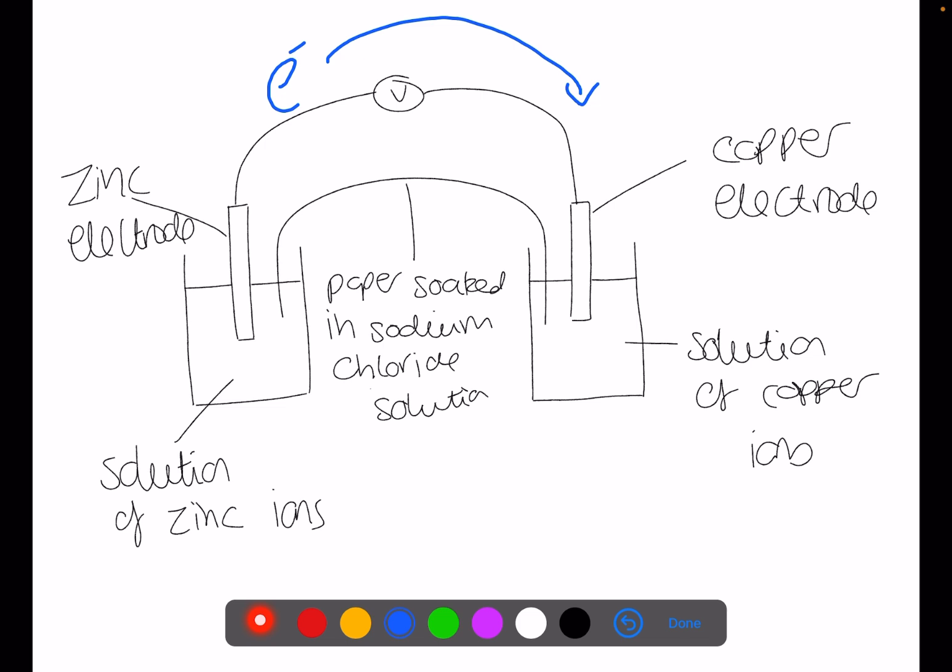Inside the beaker of the zinc ions the zinc electrode which is Zn will become Zn2+ and lose two electrons. This is oxidized.